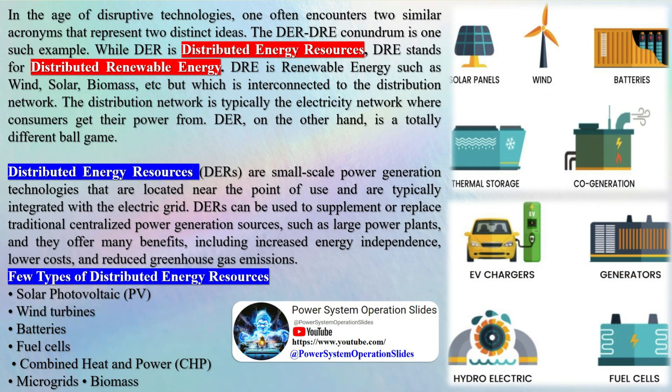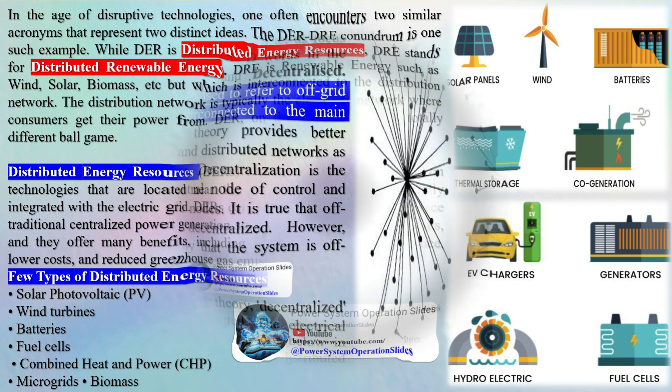DER, on the other hand, is a totally different ballgame. Distributed energy resources are small-scale power generation technologies that are located near the point of use and are typically integrated with the electric grid. DERs can be used to supplement or replace traditional centralized power generation sources, such as large power plants, and they offer many benefits, including increased energy independence, lower costs, and reduced greenhouse gas emissions.